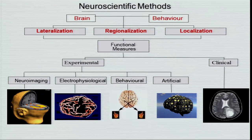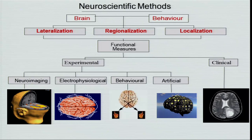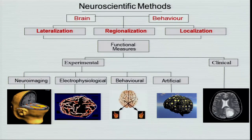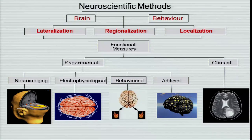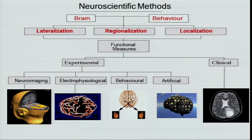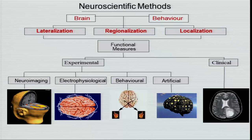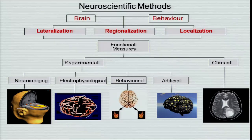Cognitive science as a discipline has derivatives from behavioral science, mathematical science, as well as biological sciences. When we try to understand cognition from a brain-and-behavior perspective, we have three models. These three models try to understand human behavior through different processes and perspectives. One is a localization model, one is called a regionalization model, and one is called a lateralization model.